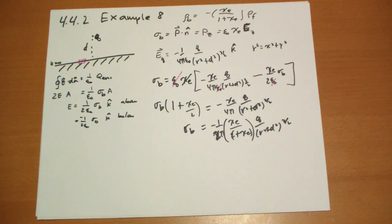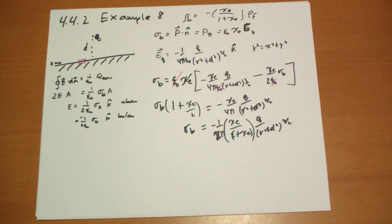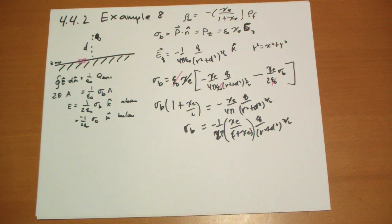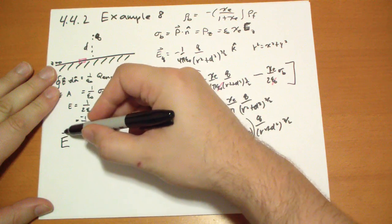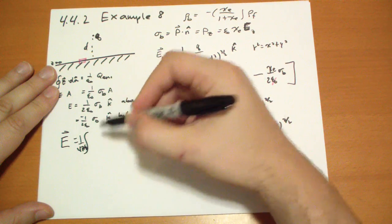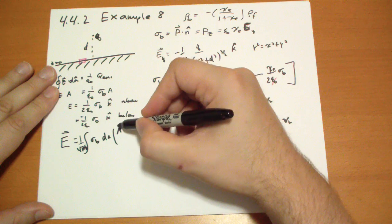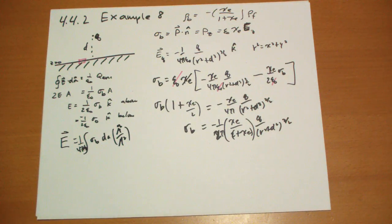Interestingly, as the susceptibility chi_E tends toward infinity, this factor becomes one and you recover the conductor case. So now we have the surface bound charge on the dielectric surface. A naive way to find the force would be to plug sigma_b into the integral formula E equals integral of (1 over 4π epsilon-naught) sigma_b dA r-hat over r² — but that would be hard. We'll use an easier way.